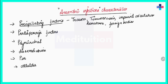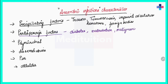The second category is predisposing factors — conditions like diabetes, malnutrition, malignancy, any immunodeficiency state, prolonged treatment for chronic conditions, or long-term antibiotic use. These are all predisposing factors that make a particular patient susceptible to anaerobic infection.